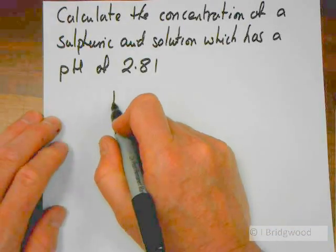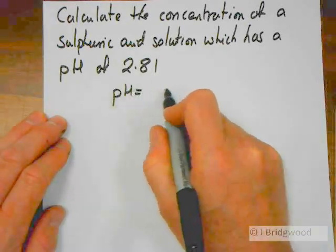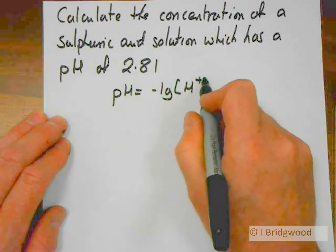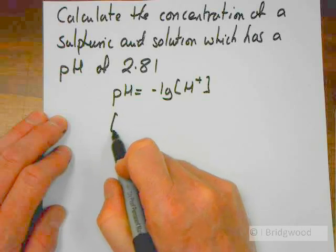So, if we've got our equation pH is equal to the negative log of concentration of hydrogen ions, how do we work out the concentration of hydrogen ions?